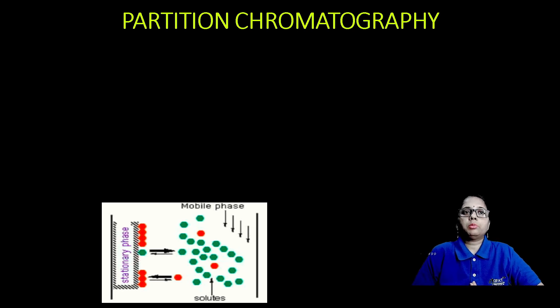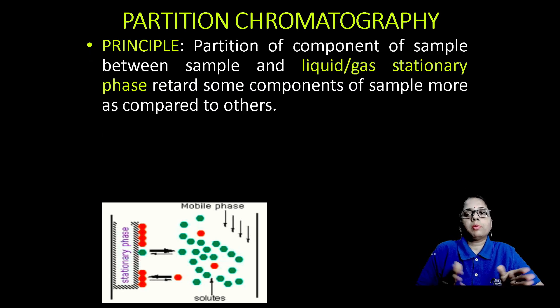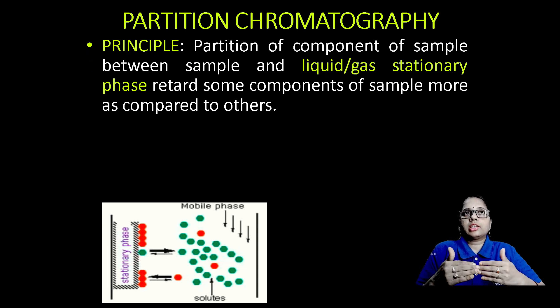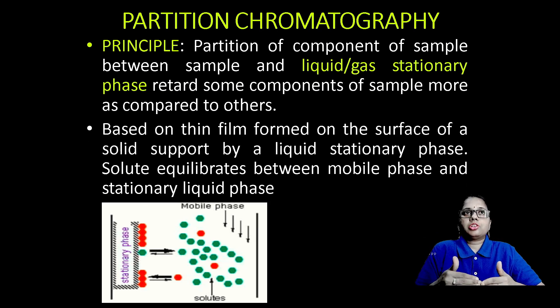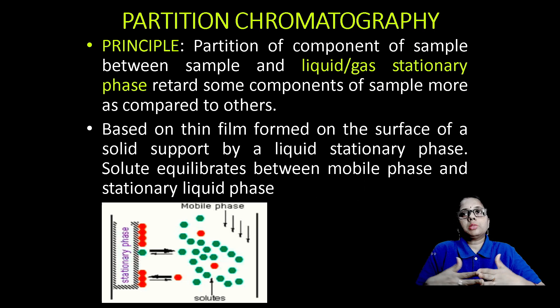Partition chromatography means that both the stationary phase and mobile phase are going to be either liquid or gas. The partition takes place between the liquid or gas stationary phase and the mobile phase, which is also a liquid. The solute equilibrates between the mobile phase and the stationary liquid phase.